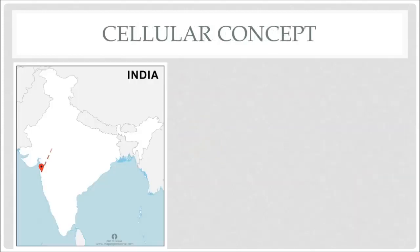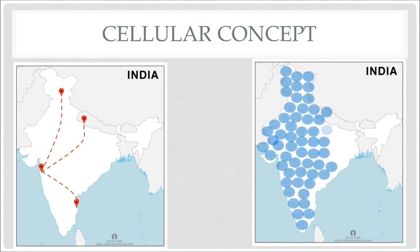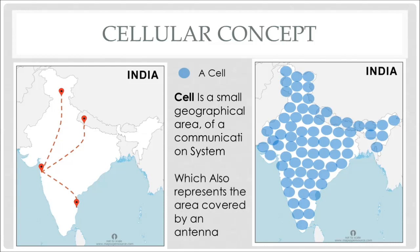Let's see the cellular concept. We can make a call from one part of a location to any part of the city. This is possible because practically every city's area is divided into small areas — each area is called a cell. Every cell has its own antenna, thus a cell can be defined as a small geographical area of a communication system, which is the area covered by a single antenna.